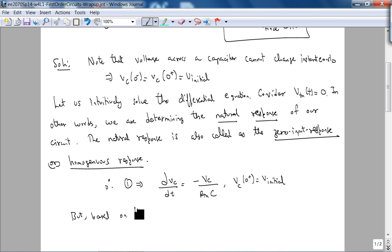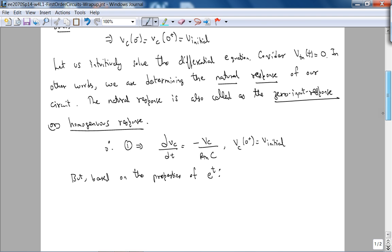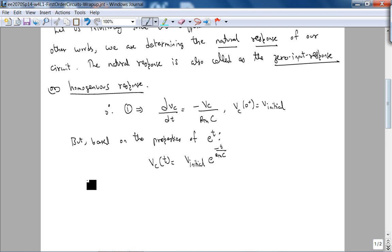Well, this basically is telling you that the derivative of the function is the negative of the function itself. Of course there is a non-unity constant, but based on the properties of the exponential function, we can easily say Vc of t is going to be V initial times e to the minus t over Rth times C. Let's check our solution. Let's check if the initial conditions are satisfied. Vc of 0 is V initial, which is basically Vc of 0 plus, so that's good.